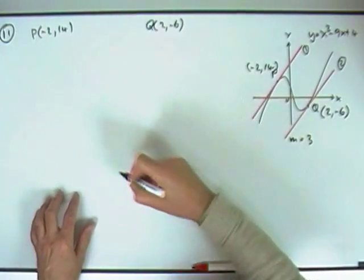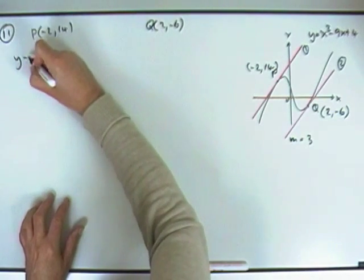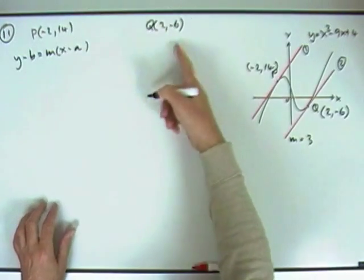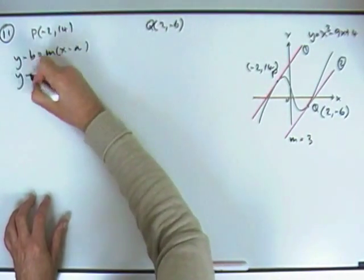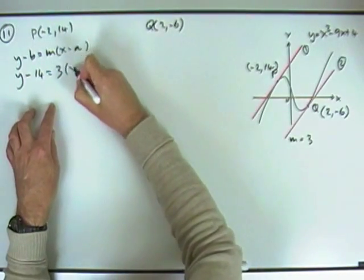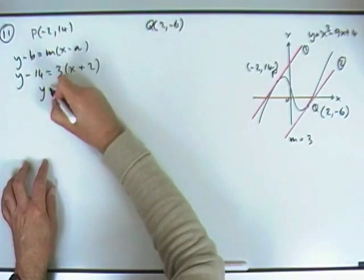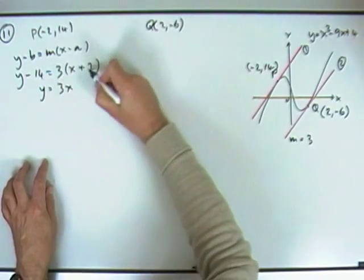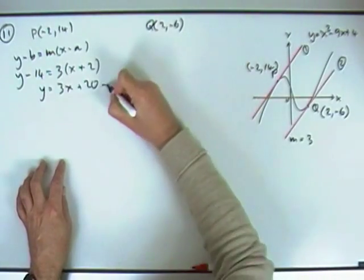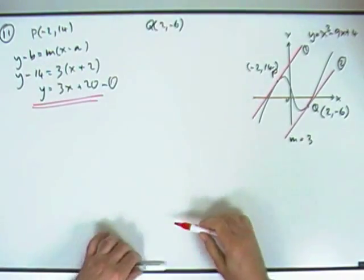Right, now for the equation of two tangents. Tangent at P, that'd be equation 1. So for the tangent at P, it's going to be y - b equals m(x - a). I might not write that again this time. So y minus the y-coordinate, 14, the gradient was 3 for them both, times x minus the negative 2, I'll just put that as plus 2. So I've got y equals 3x + 6 + 14 is plus 20, which I'll call 1. So one of the tangents, y = 3x + 20.